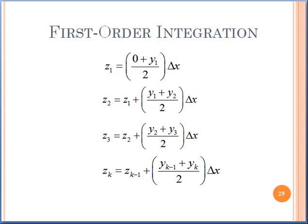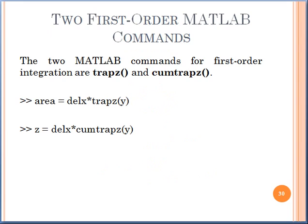Coming towards first order integration: the general formula is z(k) equals z(k-1) plus [y(k-1) plus y(k)] divided by 2, times Δx. In MATLAB for first order integration, the two commands are trapz and cumtrapz.